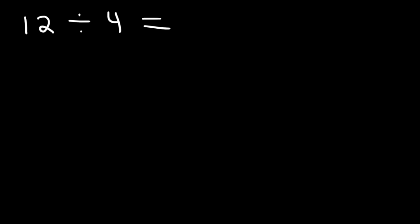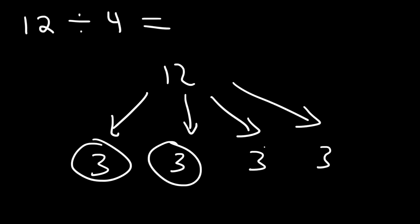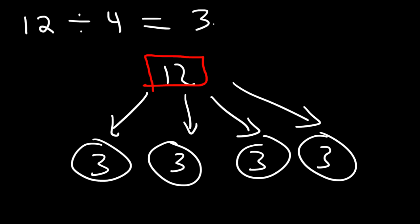Let's say if you have 12 single dollar bills. How many single dollar bills would you give each person? You have to break it up into four parts. So each person, if you're going to make it equal, should receive $3, because 3 plus 3 plus 3 plus 3 is 12. That's how you divide 12 into four equal parts — that's the basic idea behind division. So 12 divided by 4 is 3.